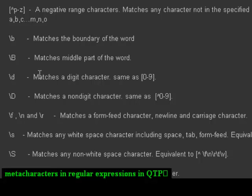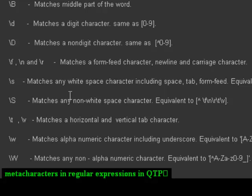If you want to match the middle part of a word, you can use \B. To match a digit, use \d; to match a non-digit character, use \D. You can also match whitespace characters like newline or carriage return using \f, \n, and \r. To match any whitespace character like space, tab, or form feed, use \s.